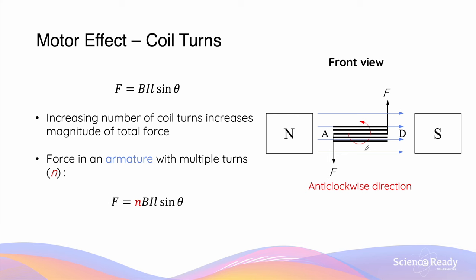Multiple turns of wire is referred to as the armature of the DC motor. The force acting on an armature is equal to the force acting on one individual turn of coil multiplied by the number of turns.